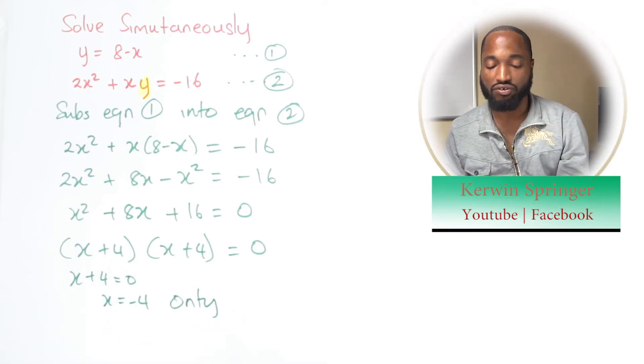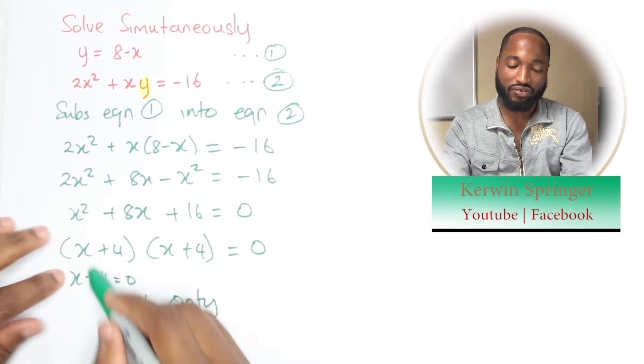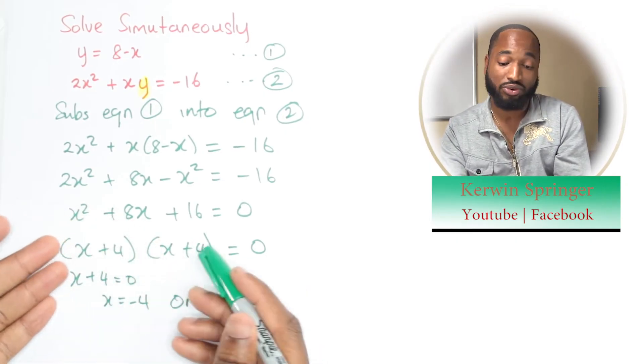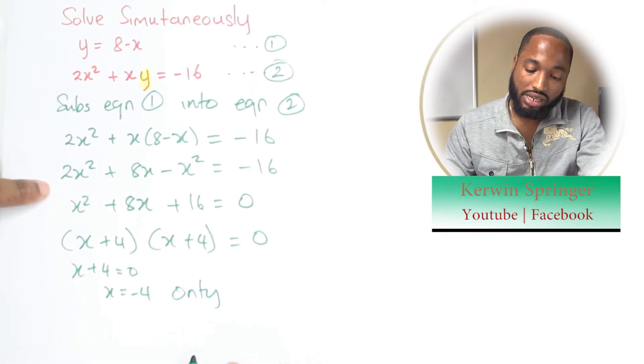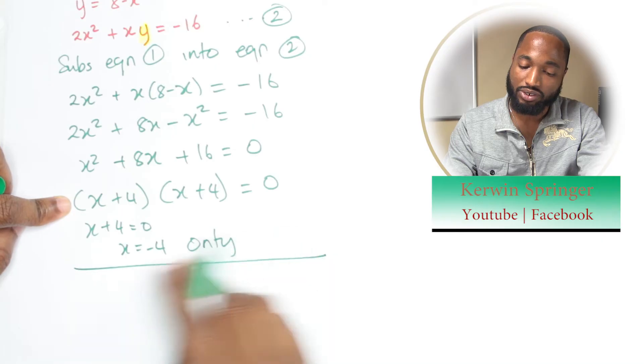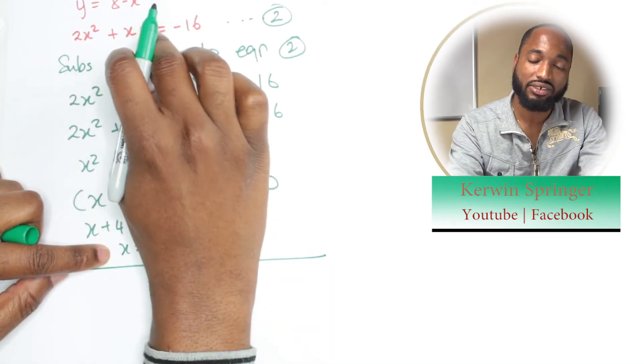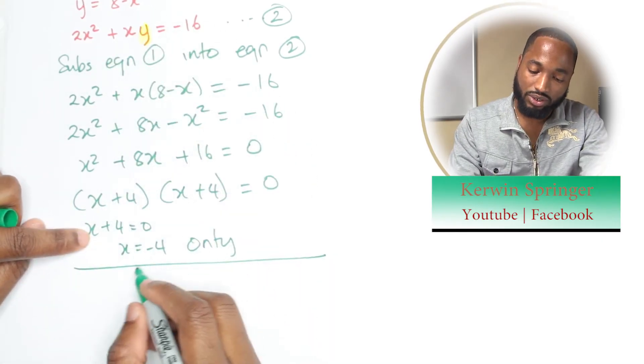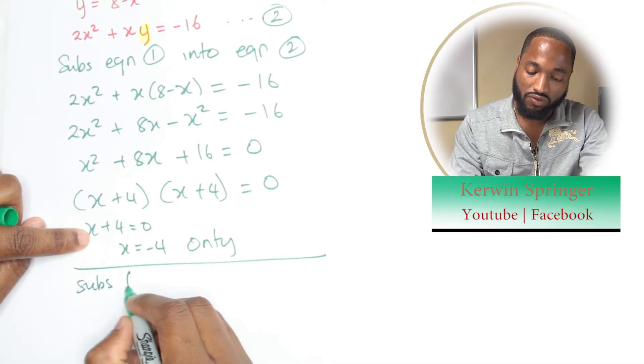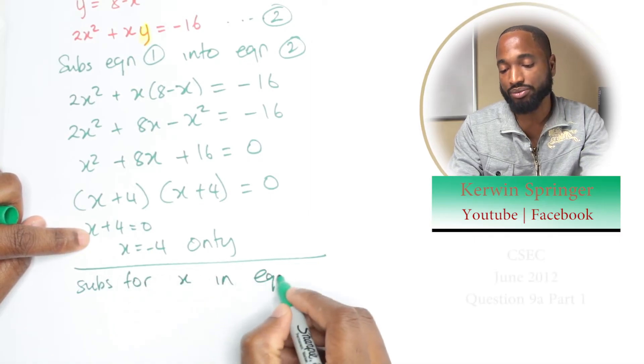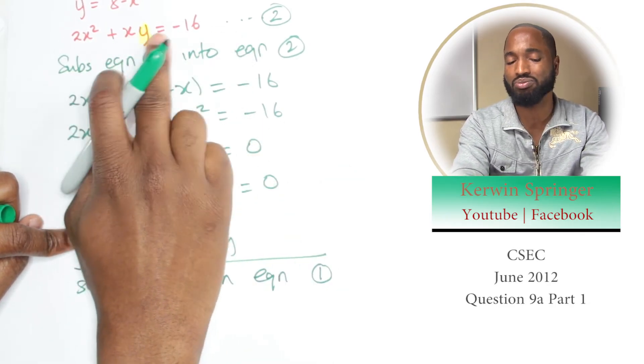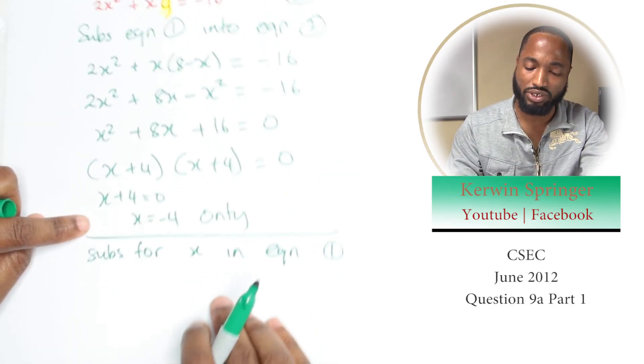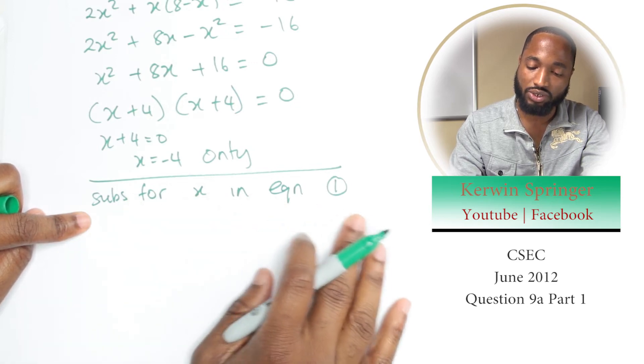So x equals negative 4 only. Normally you would have done it for both, but both are going to give you the same answer. Don't stop there—you need to still get the value for y. Substitute for x in equation 1. Don't go and substitute this in equation 2. Substitute for x in equation 1.